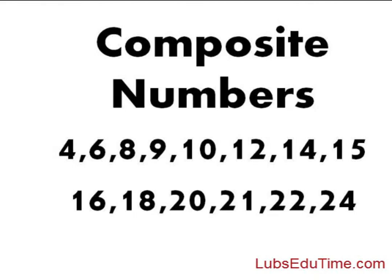A composite number is a number which has other factors beside itself and one. The set of composite numbers, for example, you can see above that you have 4, 6, 8, 9, 10, 12, 14, 15, 16, 18, 20, 21, 22, 24, 25, 26, 27, 28, 40, 42, 43, 44, and the list goes on.